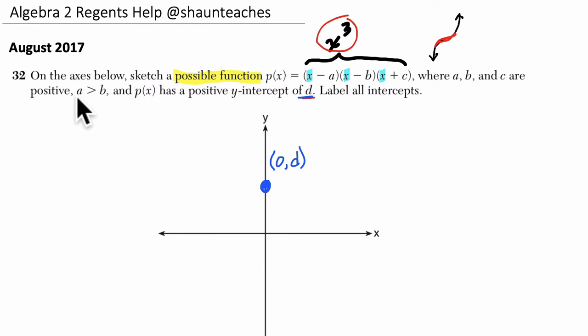All right, so a is greater than b. They don't say where c is. C can be anywhere. I'm just going to go in order. Let's put a right here, and b right here, and c over here. Let's just see, does that fit their parameters?